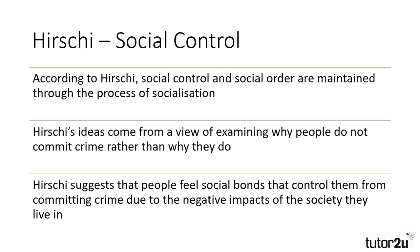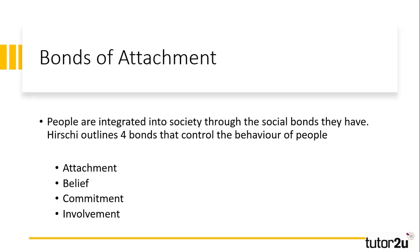He suggests that it is the negative impacts of crime on society and the attachment and integration into society that acts as a deterrent which stops people from committing crime. Hirschi claimed that there were four distinct bonds that people experienced when they were fully integrated into society and that these control the behaviour of people.